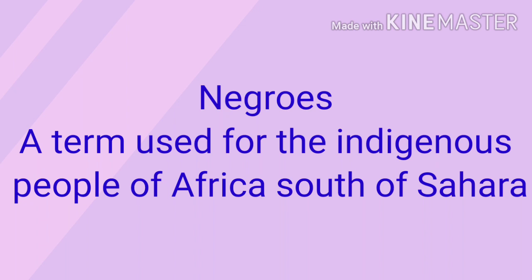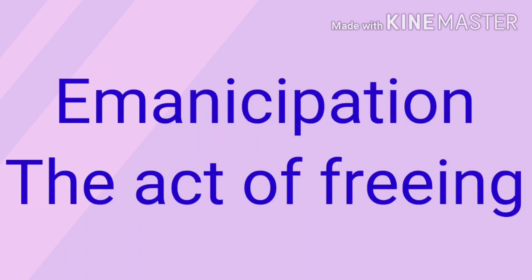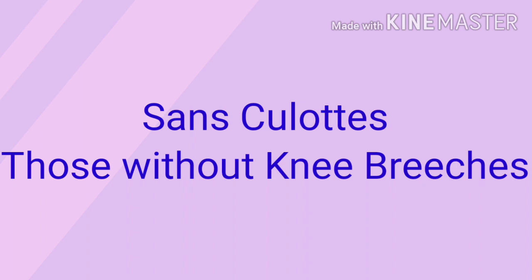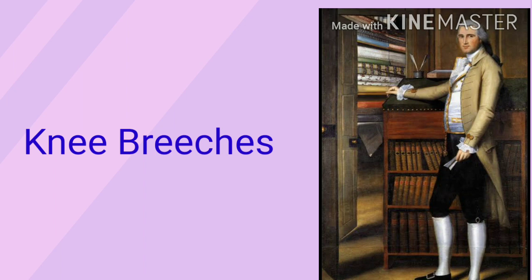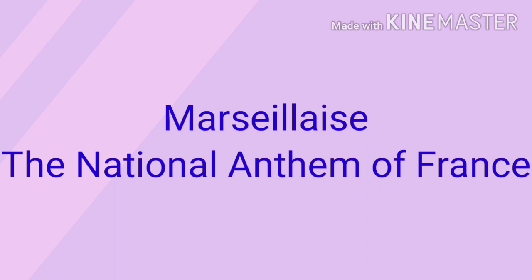Next term is Emancipation, which means the act of freeing — in Hindi, 'mukti.' Next term is Sans-culottes, meaning 'those without knee breeches.' Knee breeches were a type of cloth worn up to the knee. You can look at the picture to understand this. Marseillaise was the national anthem of France. Next term is Old Regime, which refers to the government of France before 1789.